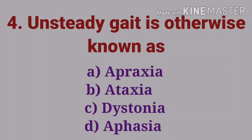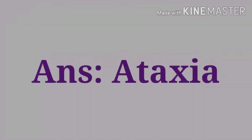The fourth question: unsteady gait is otherwise known as — options are apraxia, ataxia, dystonia, and aphasia. The answer is ataxia. Apraxia means inability to perform learned movements on command. Dystonia means involuntary muscle contraction causing repetitive or twisting movements. Aphasia means a language disorder affecting a person's ability to communicate.